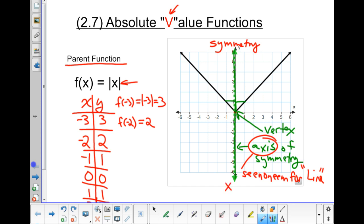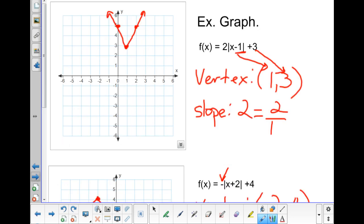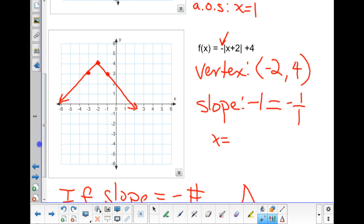This axis of symmetry will always be x equals whatever the h of the vertex is. So, because it has to go through the vertex, right? So, going back to these last two problems, if I want to know my axis of symmetry for these two Vs, the first one would be x equals 1, and the second one would be x equals, that's right, negative 2. And there is the axis of symmetry.